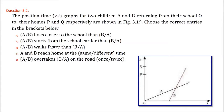The position-time x-t graph for two children A and B returning from their school O. This is the graph of A and this is the graph of B, and their houses are at P and Q. We have to choose the correct entries. The first states A lives closer to the school than B. A has to go to P, so A is closer to O than B because OP is less than OQ. A starts from school earlier than B — here A starts at t=0 but B starts afterward.